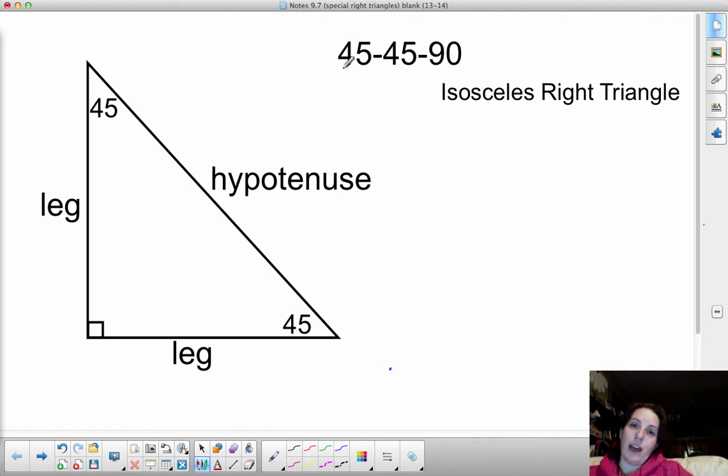Now, the first one that we're going to look at is the easier one, and it's just simply a 45, 45, 90 triangle, or we could call it an isosceles right triangle.